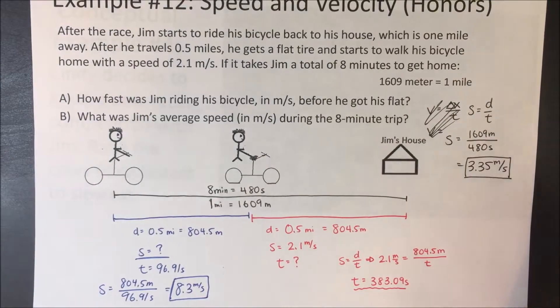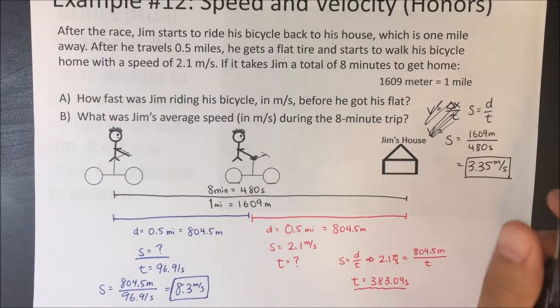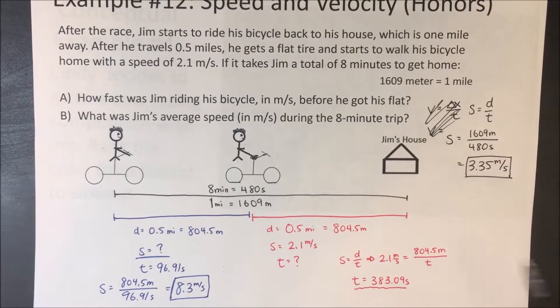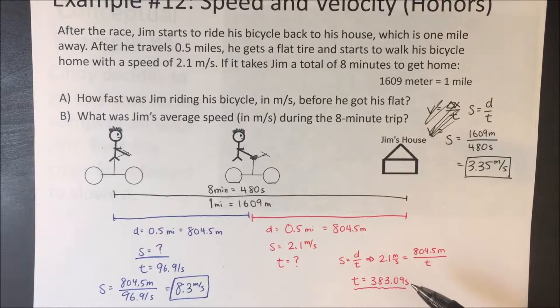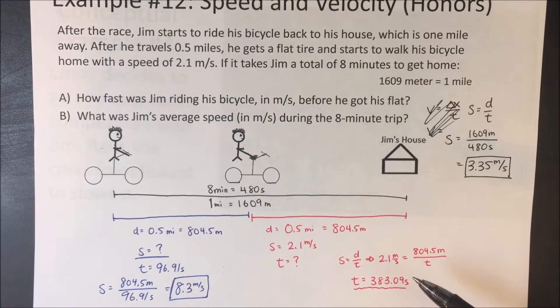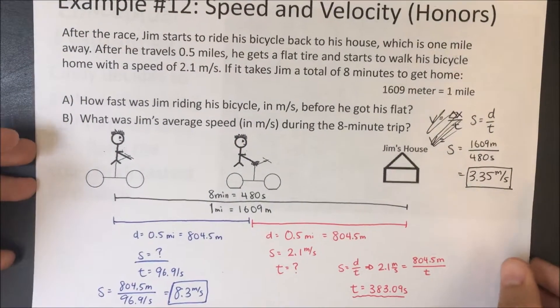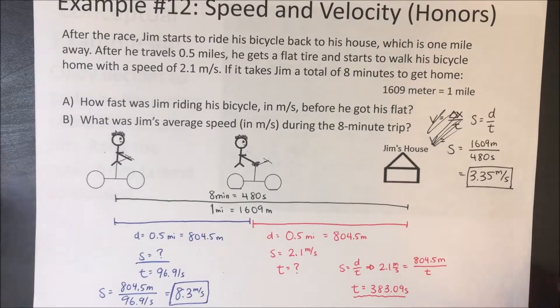When Jim gets home, he shows his mom the trophy and she gives him a nice long hug. That's all for speed and velocity.